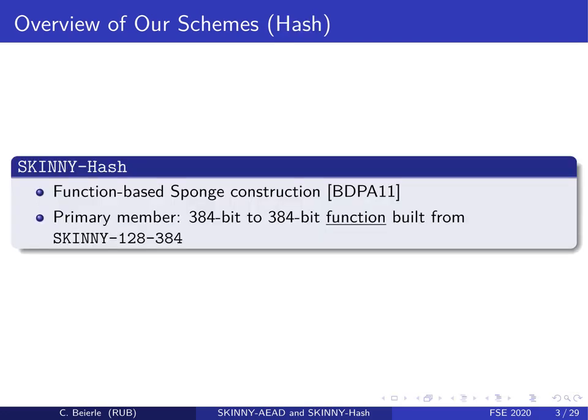Our hashing scheme, called SkinnyHash, is a function-based sponge construction. The primary member uses a 384-bit to 384-bit function built from the tweakable cipher Skinny-128-384. Compared to usual sponge constructions, we don't use an underlying permutation, but a function.